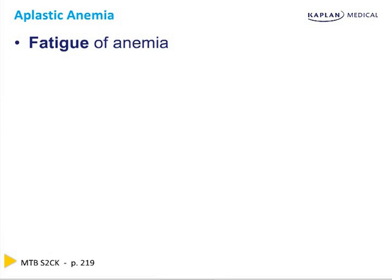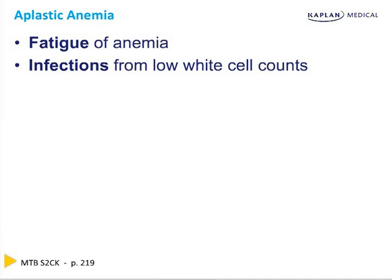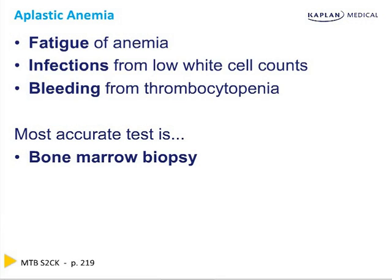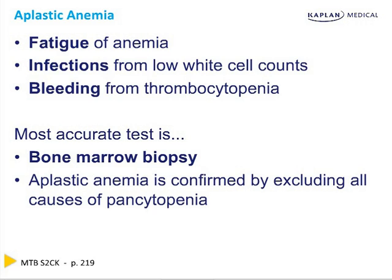Aplastic anemia presents with fatigue from anemia, infections from low white cell counts, and bleeding from thrombocytopenia. The most accurate test is the bone marrow biopsy. Aplastic anemia is confirmed by excluding all the causes we just described. In order to say it's aplastic anemia, you must confirm by excluding all the causes of pancytopenia — then it is pancytopenia of unclear etiology, or aplastic anemia.